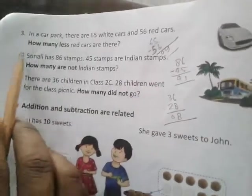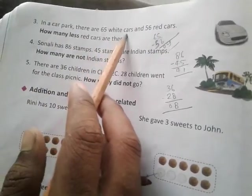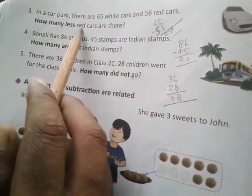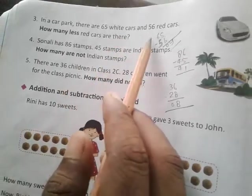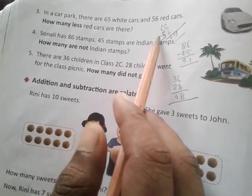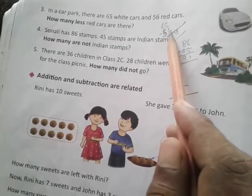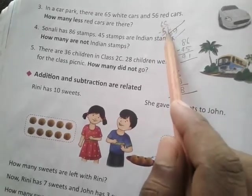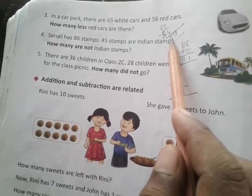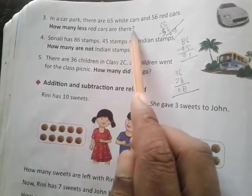Question 3. In a car park, there are 65 white cars and 56 red cars. How many less red cars are there? 65 subtract 56. 15 subtract 6 is 9, 5 subtract 5 is 0, equals 9. 9 less red cars are there.